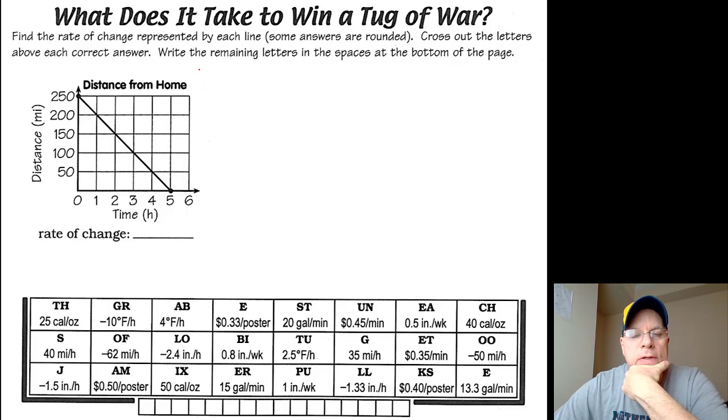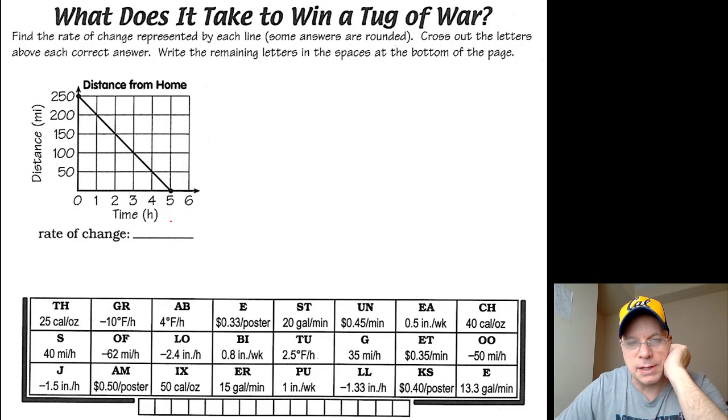Distance from home is the title of the graph. On my y-axis I have distance in miles, just like the last problem. On the x-axis, the independent variable is hours, just like the last one. But this is a very different line here—it's starting at 250 and eventually going to zero.